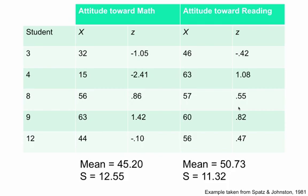On the attitude toward math, the overall mean was 45.2 and the standard deviation 12.55. On the survey about attitudes toward reading, the mean was 50.73 with a standard deviation of 11.32. Overall, the students had a more positive attitude toward reading, and their attitude toward mathematics was more varied. In the table I've included raw scores and z-scores for five students. Student eight scored 56 on attitude toward mathematics and a slightly higher score of 57 on attitude toward reading. At first glance you might think this student has a more favorable attitude toward reading — however, the z-scores show the student's attitude toward math is more positive at 0.86 versus 0.55 for reading.